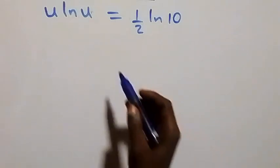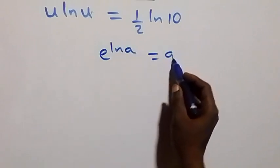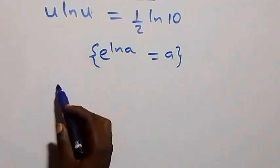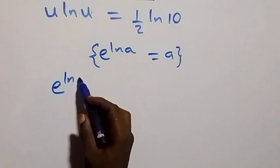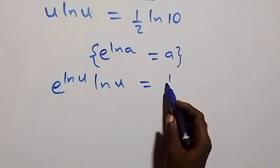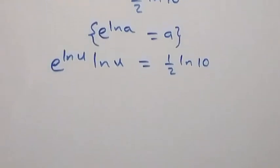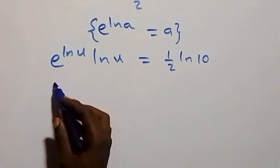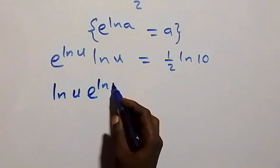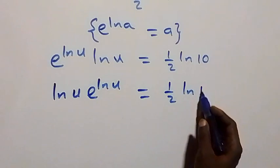When we apply the exponent form of ln, u can be written as e^(ln u). So we have e^(ln u) times ln u equals half ln 10. This is the same as ln u times e^(ln u) equals half ln 10.